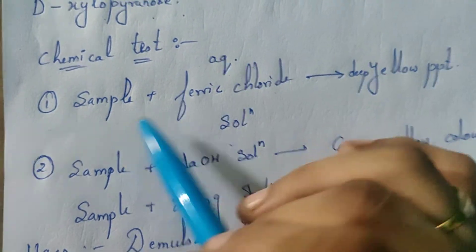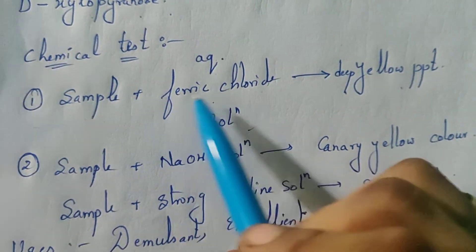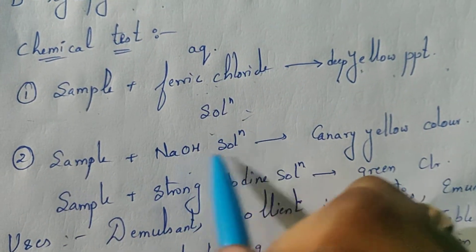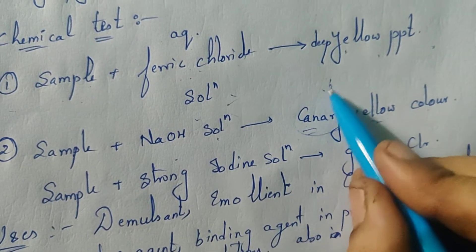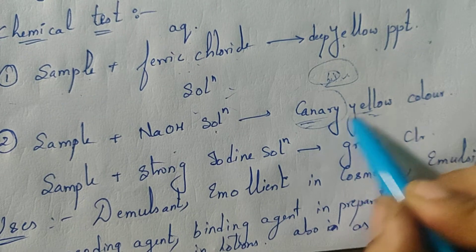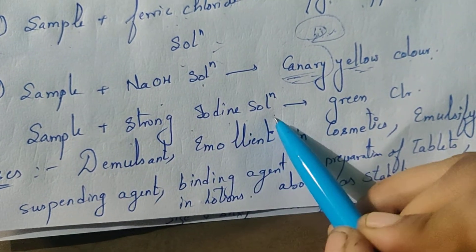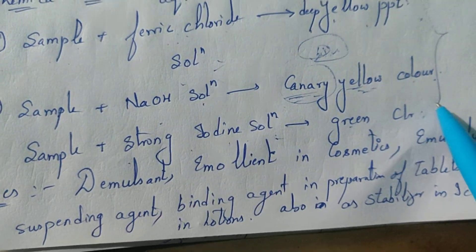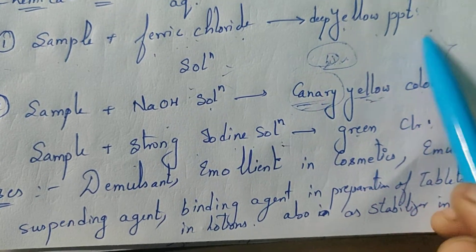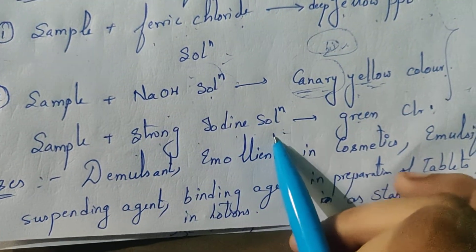Coming to chemical tests. Sample added with aqueous ferric chloride solution gives a deep yellow precipitate. Sample with sodium hydroxide solution produces canary yellow color — canary is a bird with a distinct unique yellow color. Sample plus strong iodine solution produces green color. These are the three chemical tests.